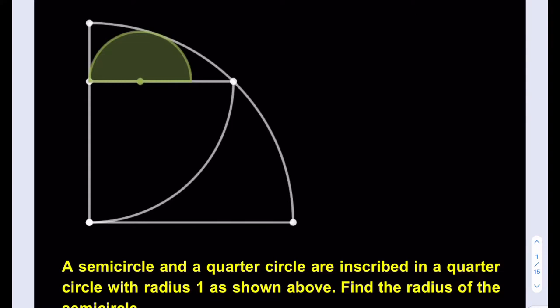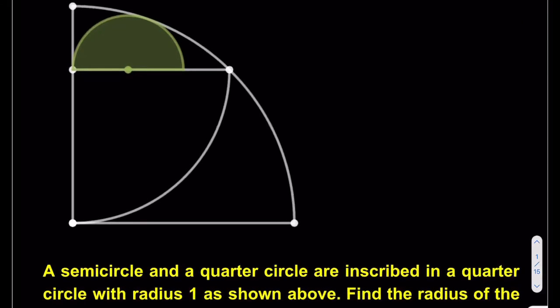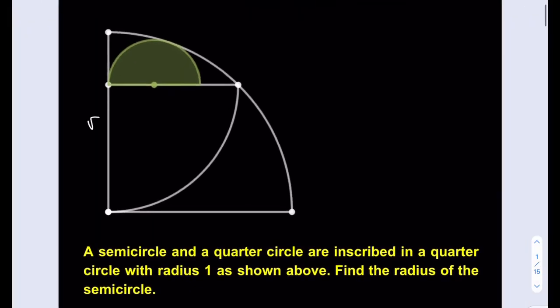Let's go ahead and make some connections here. In a previous video, if you remember, we had this kind of setup, and we had found the radius of the quarter circle to be root 2 over 2. So let's go ahead and make our crucial connection here.